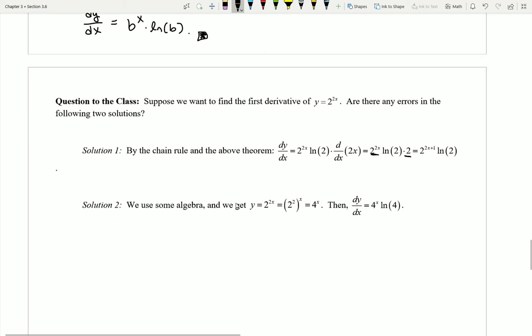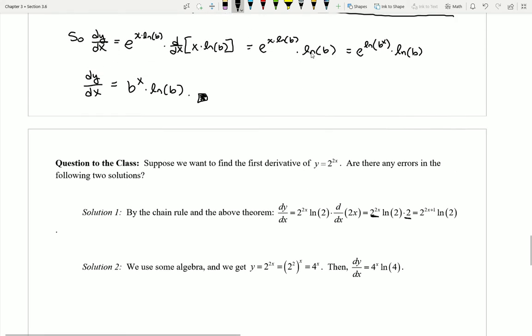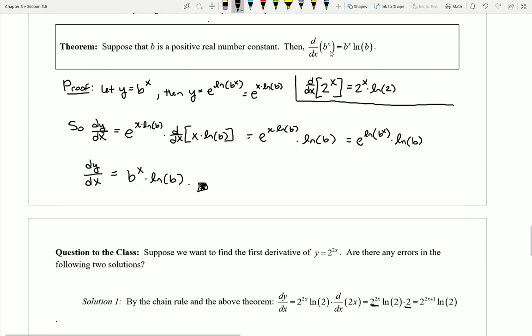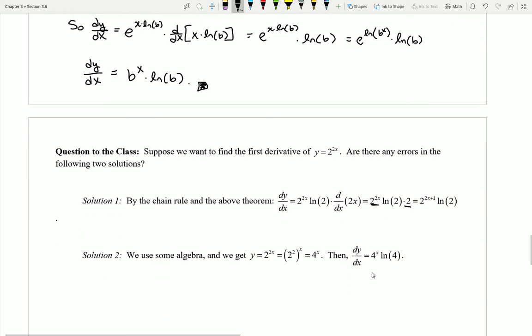Now I could also use some algebra maybe before I start. I could rewrite this 2 to the 2x as 2 to the 2 and then to the x, or 4 to the power of x, and then using the derivative rule that we have up above, I could say that if I had the derivative of 4 to the x, the answer should be 4 to the x natural log 4, which is exactly what I have.